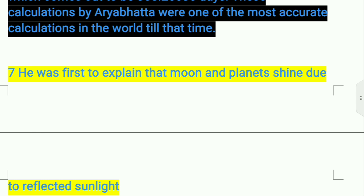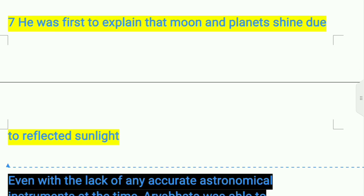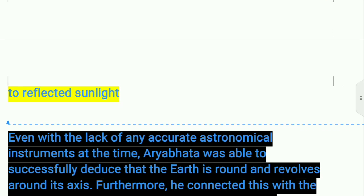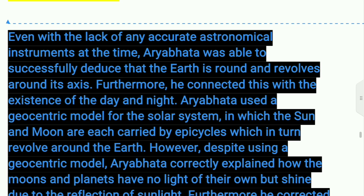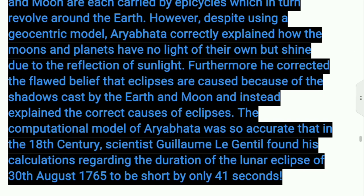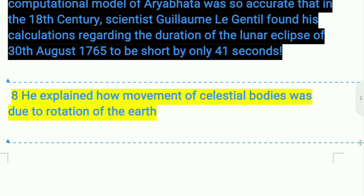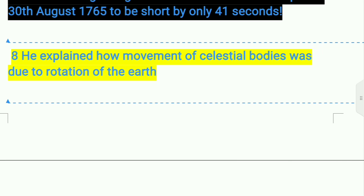The seventh achievement: he was the first to explain that the moon and the planets shine due to reflected sunlight. He also explained how the movement of celestial bodies was due to the rotation of the earth.